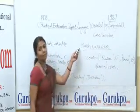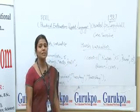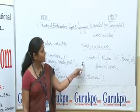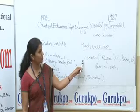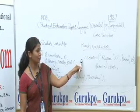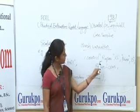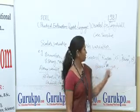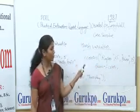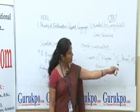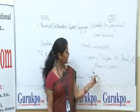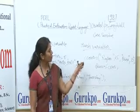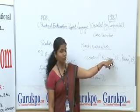Next we come upon hash variables. Hash variables represent both strings and numbers. Here we can see that %coin — the percentage symbol represents the hash variable. We can see that %coin is rupees 25, paisa 15. To print rupees and paisa and their values, we write 'print %coin'. So a hash variable prints both the value and the string.